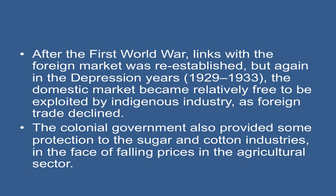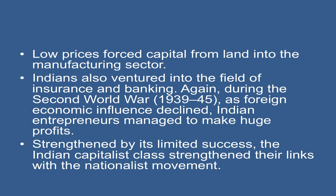The colonial government also provided some protection to the sugar and cotton industries in the face of falling prices in the agricultural sector. Low prices forced capital from land into the manufacturing sector. Indians also ventured into the field of insurance and banking. Again, during the Second World War, as foreign economic influence declined, Indian entrepreneurs managed to make huge profits. Strengthened by its limited success, the Indian capitalist class strengthened their links with the nationalist movement.